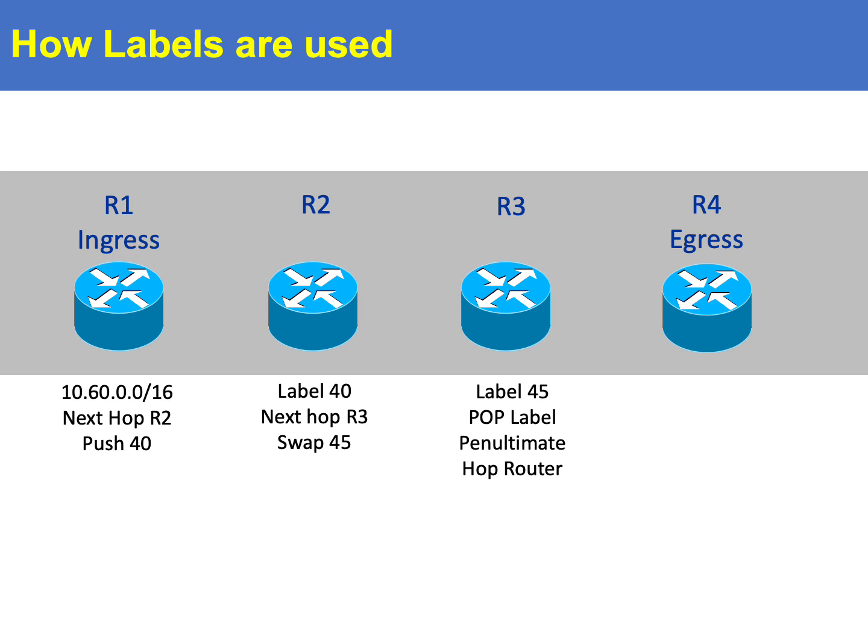Router 3 is a penultimate hop router. It is frequently the job of this router to remove the label. This helps reduce the load on the egress router as it may have to remove the labels from many other sources. The packet can now be directed to the egress router for final delivery.